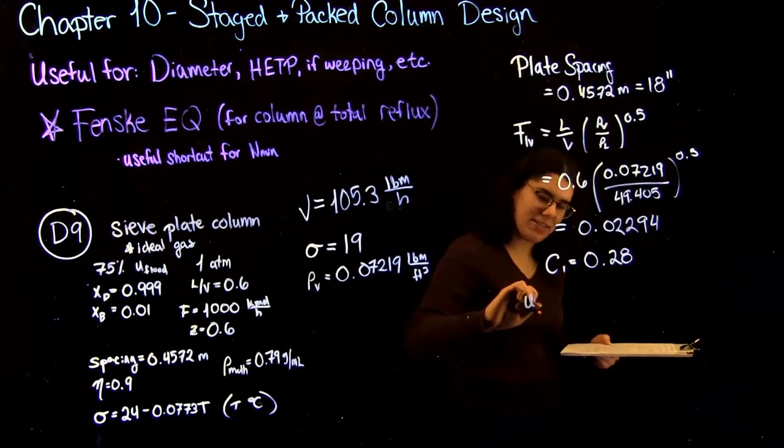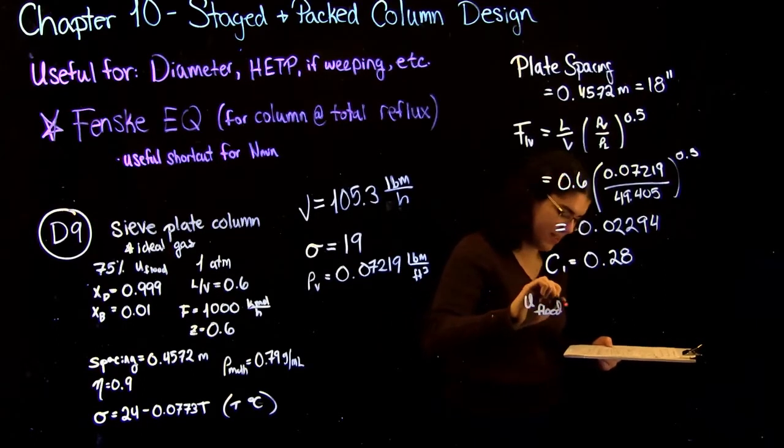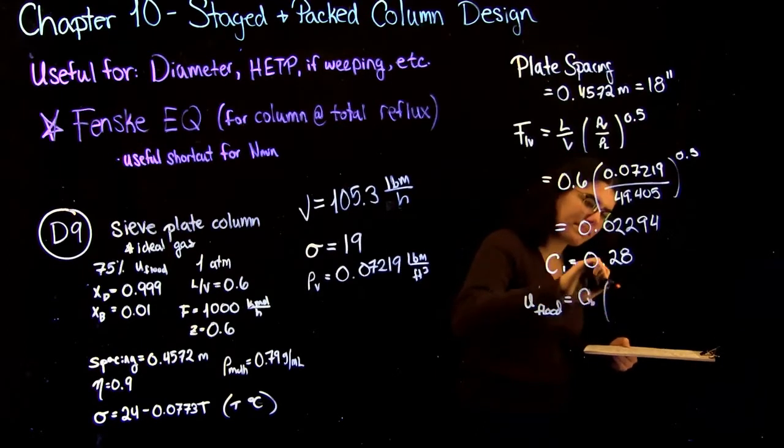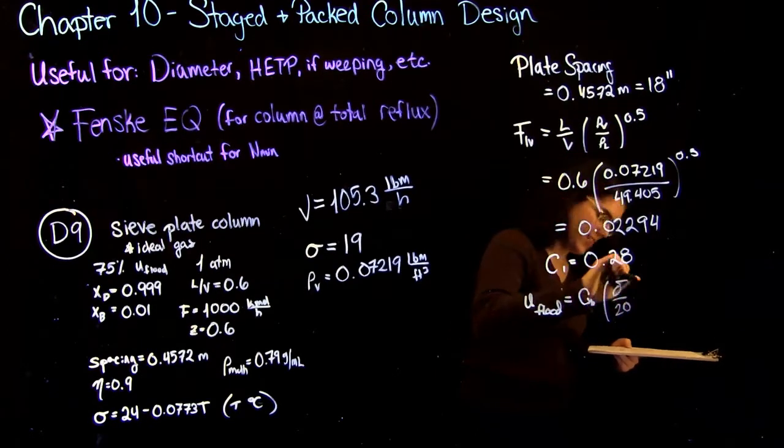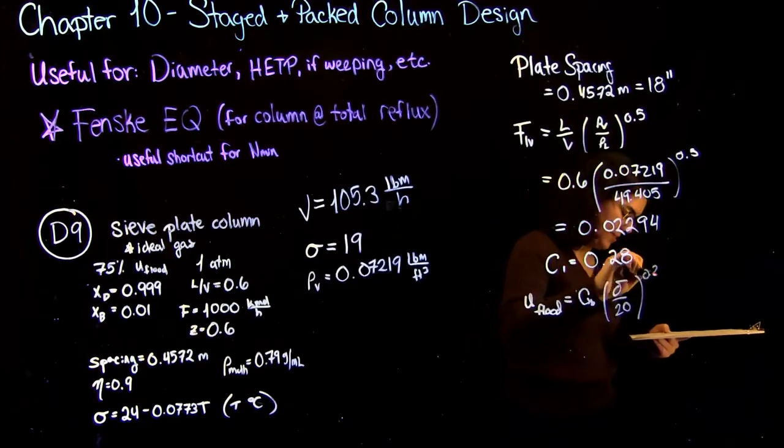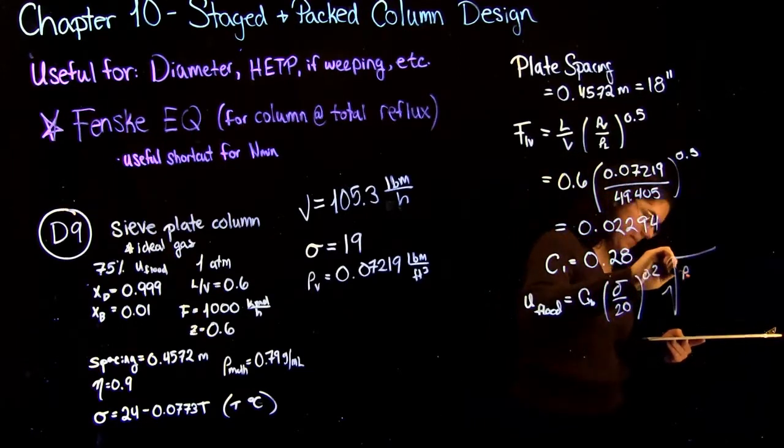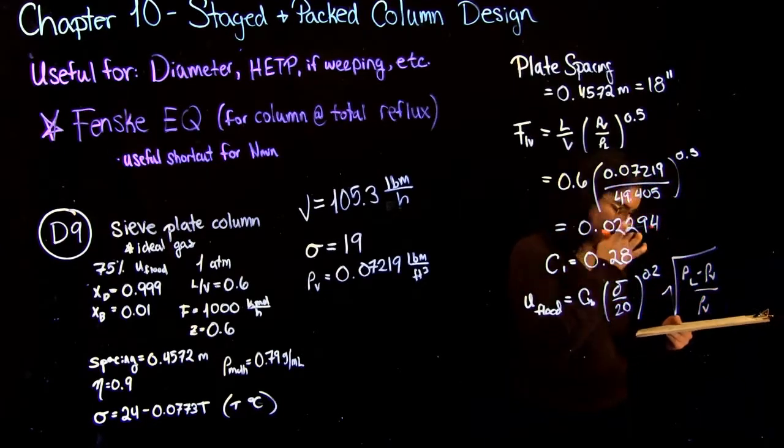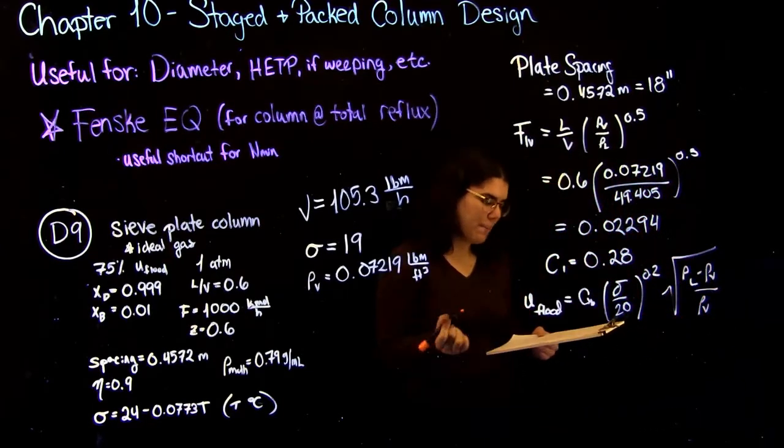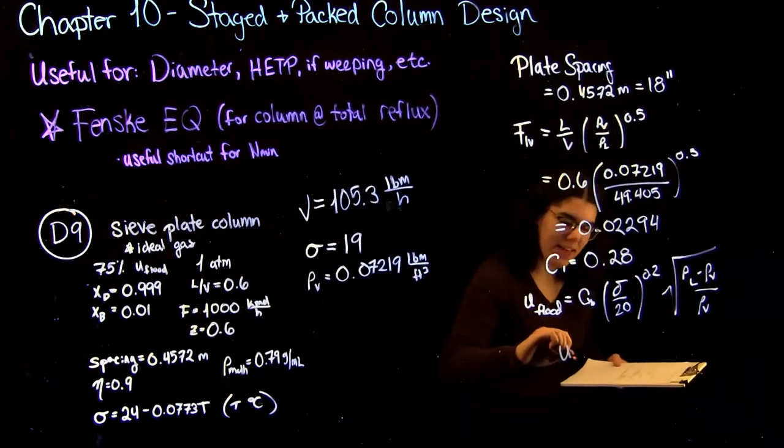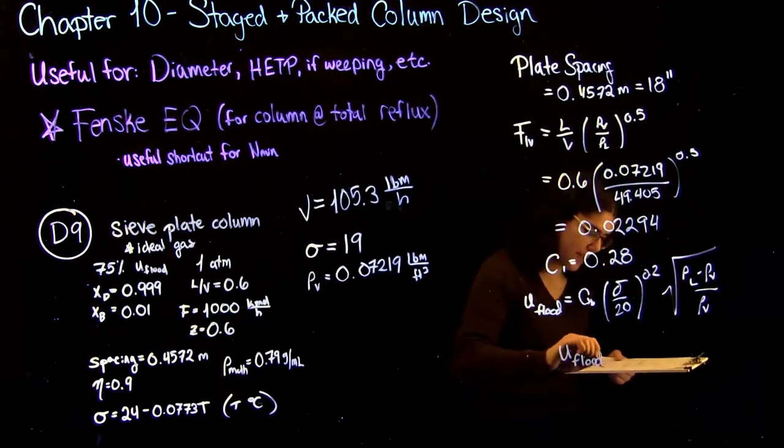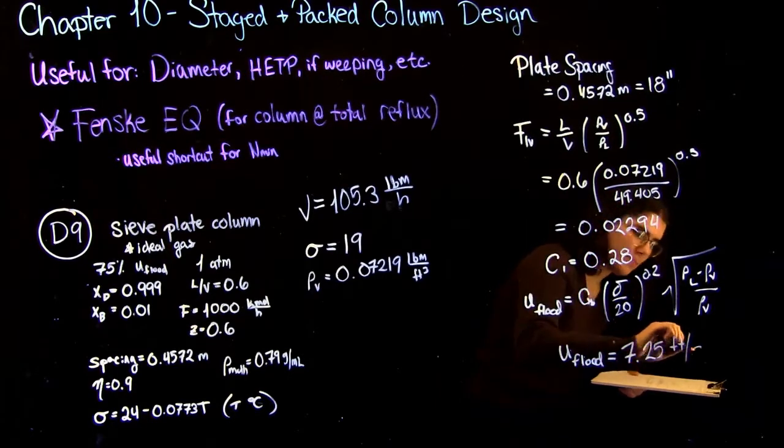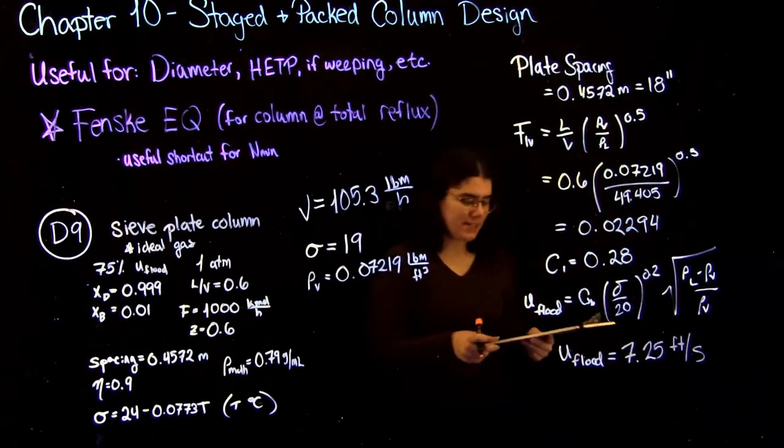So now that we have that, we're going to be able to plug everything now into our flooding velocity equation from before. So I'm just going to rewrite it. Again, nothing has changed from the first time that I wrote this, we just have all of our values and now we can plug them in. So since we have everything, our flooding velocity is just going to be equal to 7.25 feet per second. And this is the last thing we need to find.